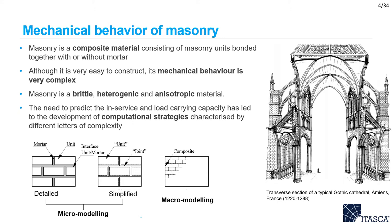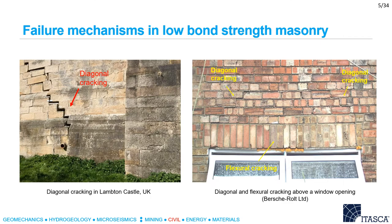Such models range from considering masonry as an anisotropic continuum — the macromodeling approach — to the more detailed ones considering masonry as an assemblage of units and mortar joints — the micromodeling approach. Since old and deteriorated masonry structures are typically characterized by low bond strength, cracking is often a result of the debonding of masonry units from the mortar joints. Given the importance of the masonry unit-to-mortar interface, micromodeling approaches based on the discrete element method are better suited to simulate the serviceability and load carrying capacity of such structures.